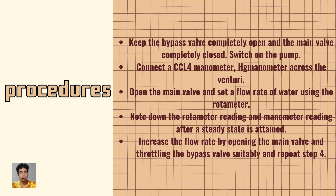2. Connect a CCl4 manometer and mercury manometer across the Venturi. 3. Open the main valve and set the fluid flow of water using the rotameter. 4. Note down the rotameter reading and manometer reading after a steady state is obtained. Increase the flow rate by opening the main valve and throttling the bypass valve suitably, then repeat step 4.